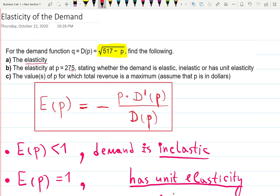Then we need to find elasticity at the given price p = 275, state if the demand function is elastic, inelastic, or has unit elasticity, and finally find at which p we will have maximum revenue.